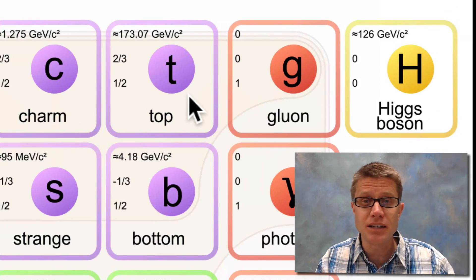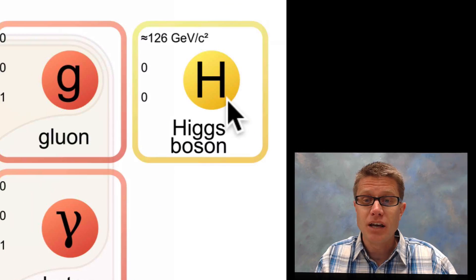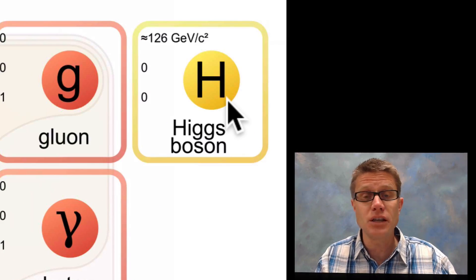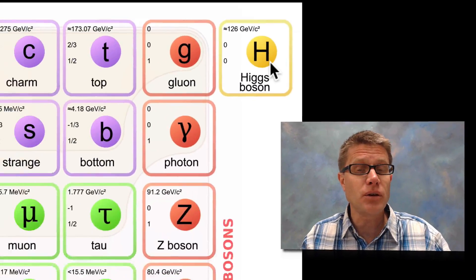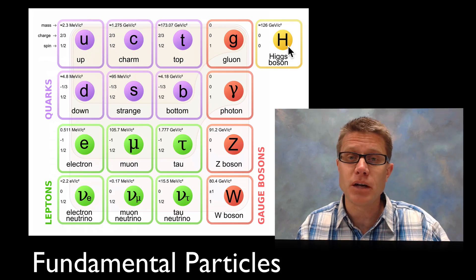For example the top quark was discovered in 1995. The tau neutrino in 2000. And if you have been reading the paper, the Higgs boson was discovered in 2013 using the Large Hadron Collider. And so you do not have to memorize all the charges and masses or the names of these fundamental particles.